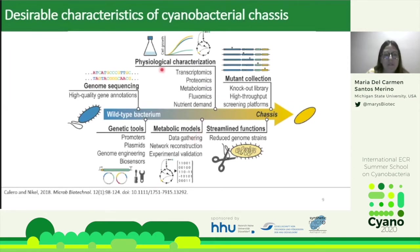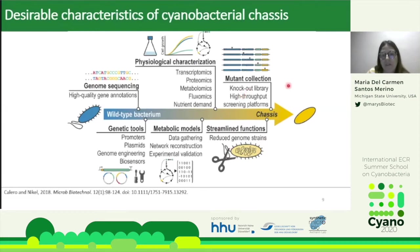Previous physiological characterization, transcriptomics, and other omics analyses are helpful for identifying conditions to improve production. Although not yet in cyanobacteria, reduced-genome strains developed in E. coli represent an interesting area to explore. If mutant collections such as knockout libraries have been developed, they could help remove competitive pathways, and high-throughput screening platforms will speed up the generation of the final chassis.